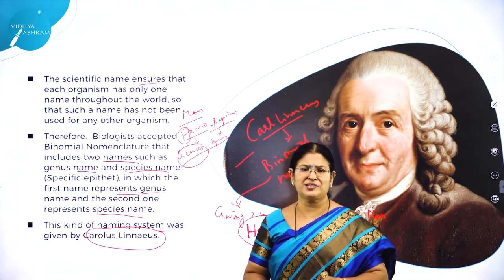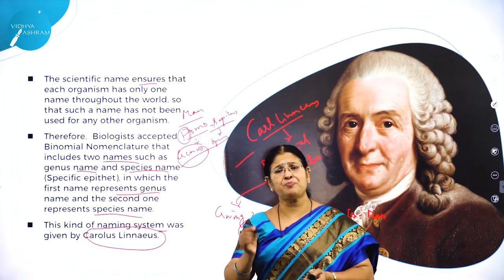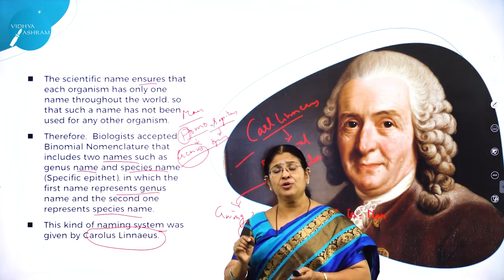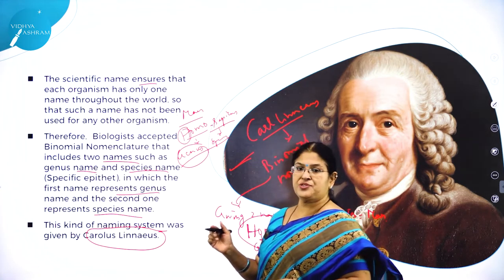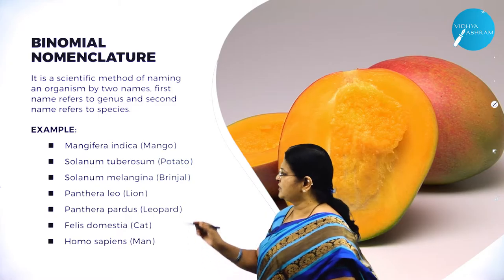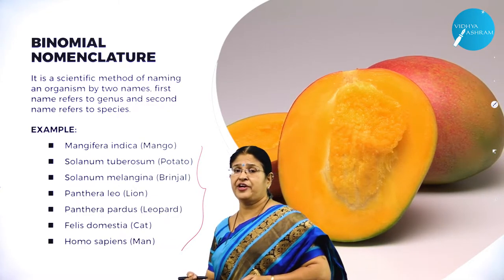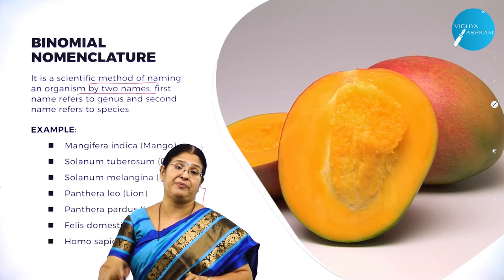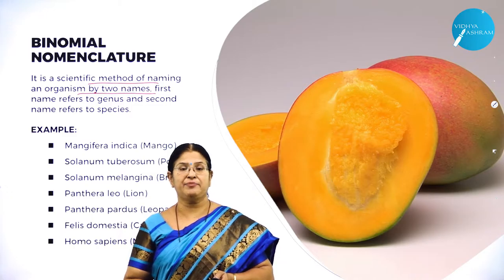There are millions of organisms on this planet Earth. Classification — also called taxonomy — helps us identify them. Carolus Linnaeus classified plants and animals, hence he is rightly called the father of taxonomy. Binomial nomenclature is a scientific method of naming an organism by two names, where the first name refers to genus and the second refers to species.